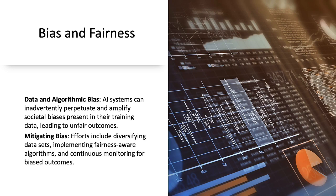AI systems can unintentionally replicate and magnify existing societal biases found in their training data, resulting in unfair outcomes. To combat this, measures such as enriching data sets with more diverse information, applying fairness-aware algorithms, and ongoing surveillance for biased results are crucial for mitigating bias in AI applications.